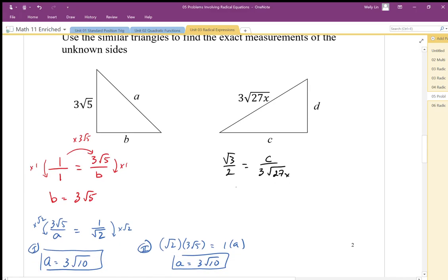Then I can just cross multiply here. So I end up with the square root of 3, 81x, and that's all over 2. That's going to give me side C. I should simplify that. There's a perfect square there.